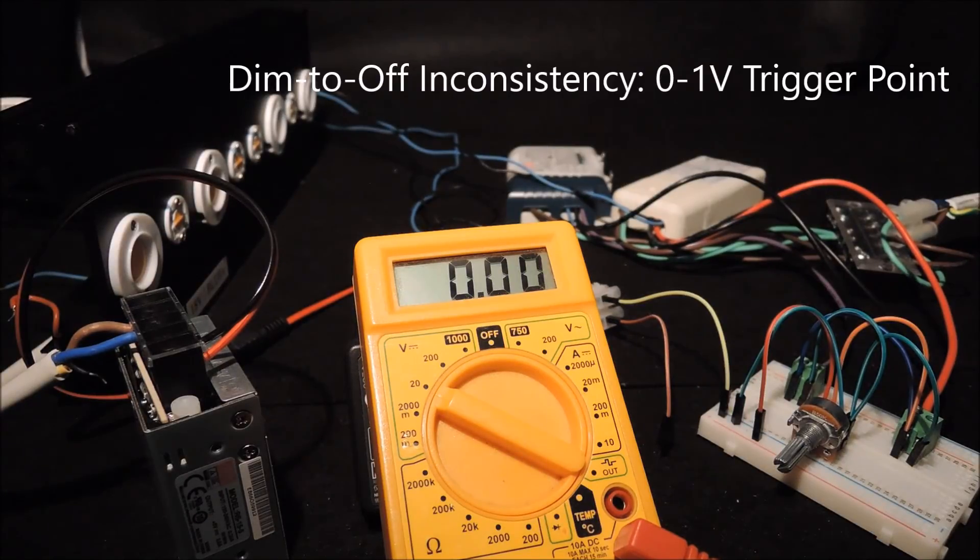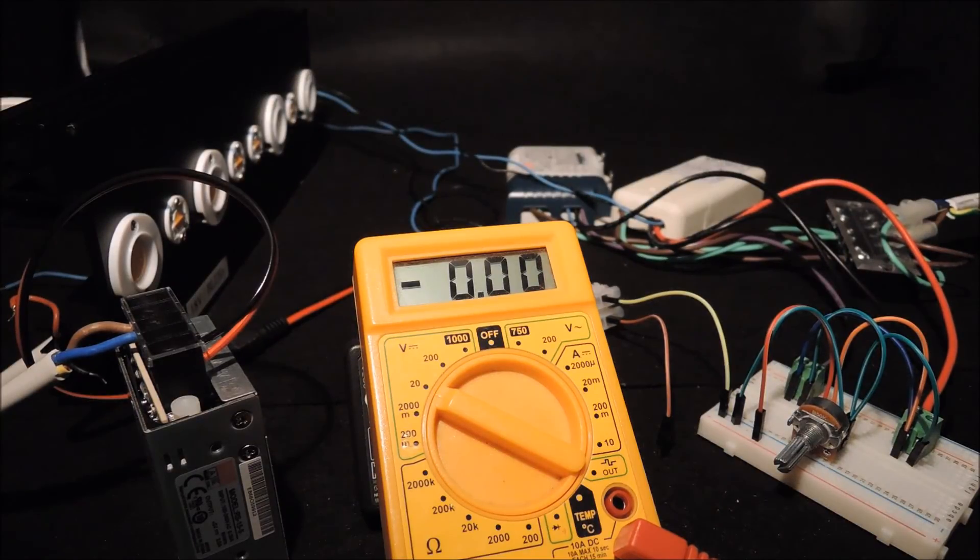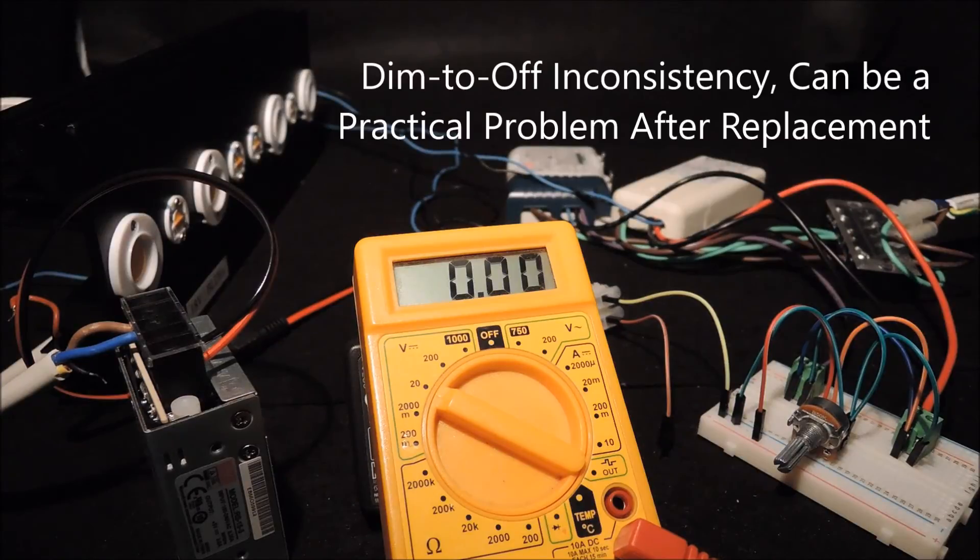The inconsistency issue manifests itself at even voltage less than 1V range. This becomes a real problem after you change the driver or controller and you face a different dim to off behavior.